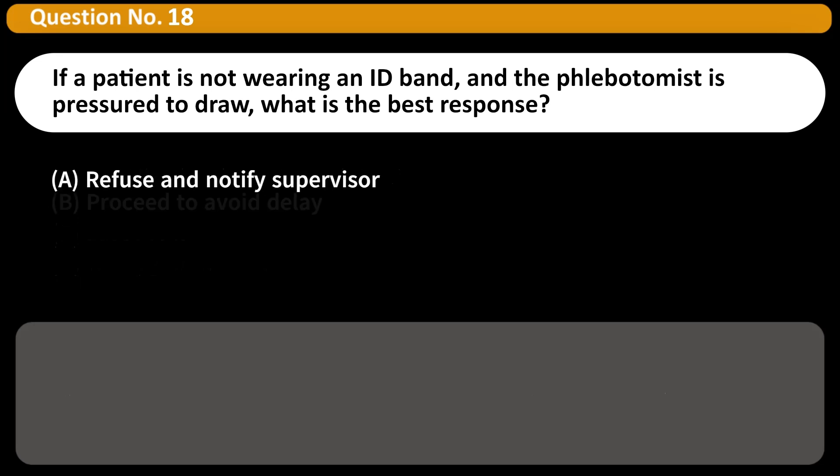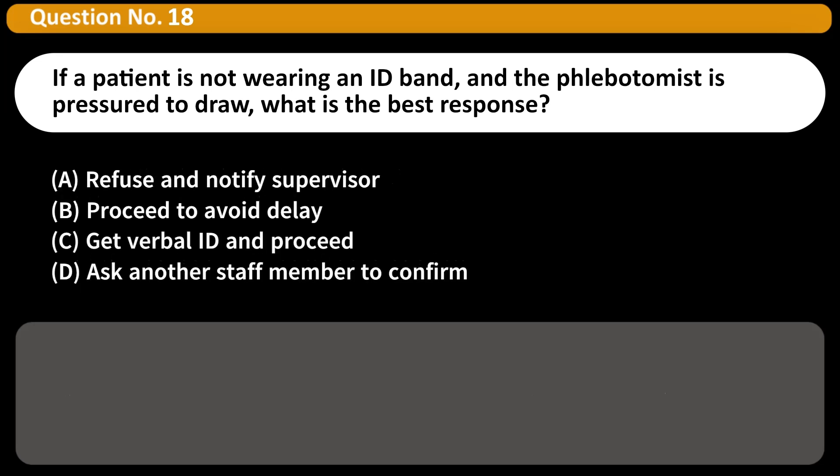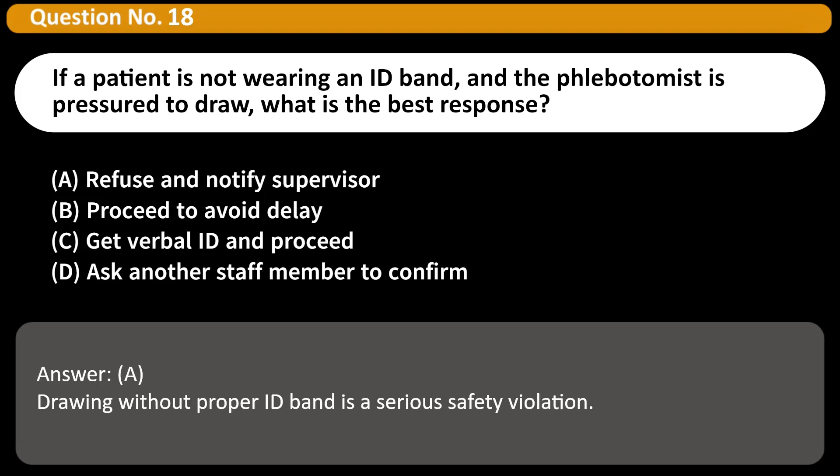If a patient is not wearing an ID band and the phlebotomist is pressured to draw, what is the best response? A. Refuse and notify supervisor. B. Proceed to avoid delay. C. Get verbal ID and proceed. D. Ask another staff member to confirm. Answer: A. Drawing without a proper ID band is a serious safety violation.